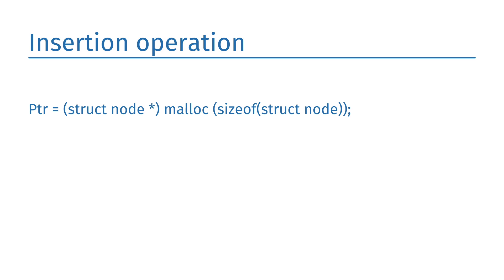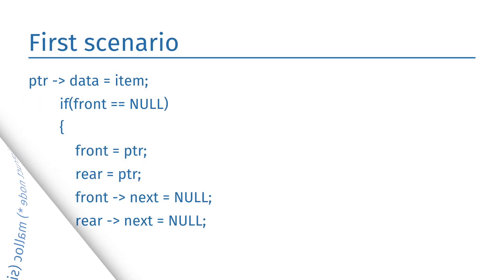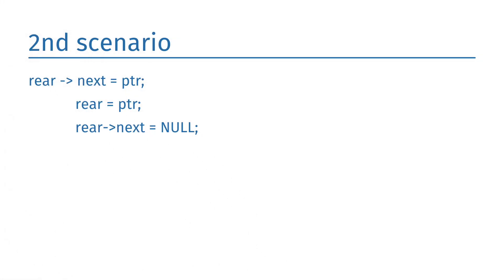The insert operation appends the queue by adding an element to the end. The new element will be the last element of the queue. First, allocate memory for the new node pointer using: pointer = (struct node *) malloc(sizeof(struct node)). There are two scenarios for inserting into a linked queue. In the first scenario, inserting into an empty queue — the condition front == null becomes true, the new element is added as the only element, and the next pointer of both the new node and rear point to null. In the second case, when the queue contains more than one element, the condition front == null is false, so we update the rear pointer so that its next points to the new node, make rear point to the newly added node, and set the next pointer of the new rear to null.